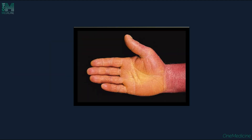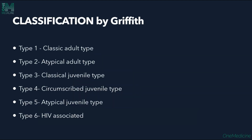The PRP sandal and PRP hand show thickened hyperkeratotic yellowish-colored palms and soles. The classification of PRP was given by Griffiths and includes six types: Type 1 is classic adult type, Type 2 is atypical adult type, Type 3 is classical juvenile type, Type 4 is circumscribed juvenile type, Type 5 is atypical juvenile type, and Type 6 is HIV-associated type.